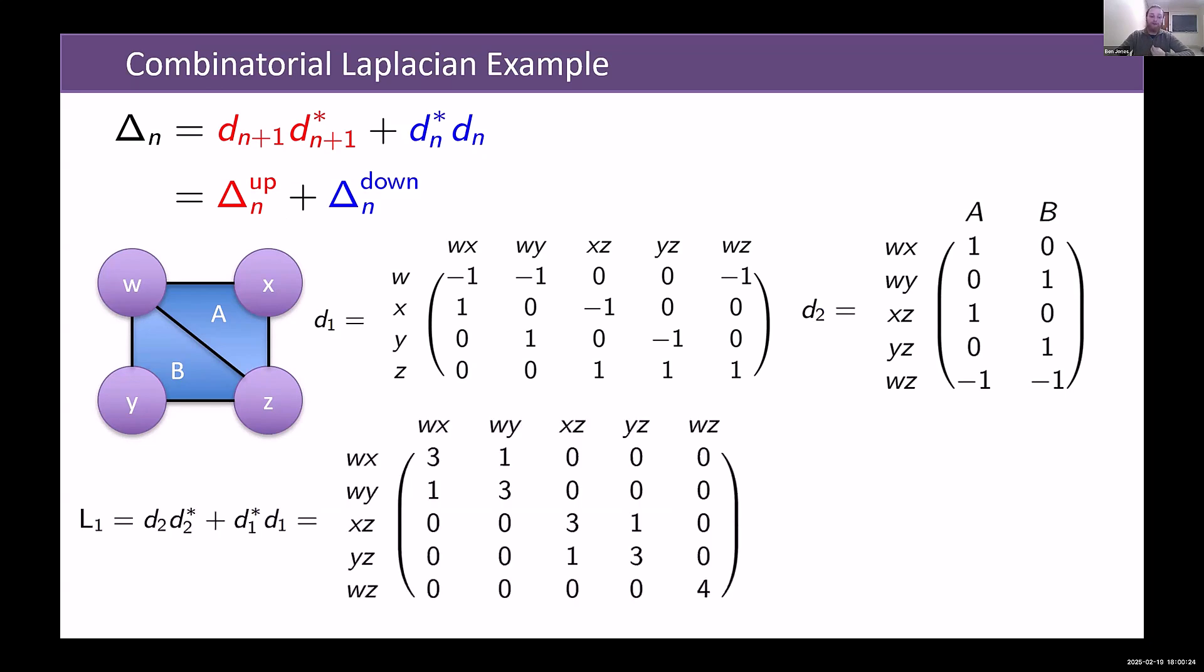We can compute the first Laplacian by doing the matrices times their transposes in the correct order and adding them together. This gives us some matrix that is a square matrix in the first dimension, so L_1 corresponds to edges. Each row and column is going to correspond to edges.